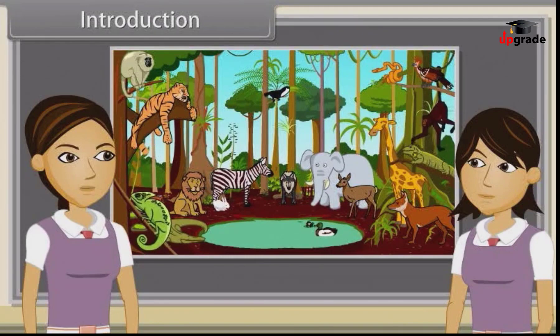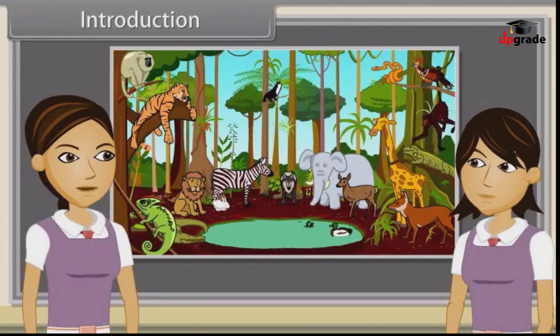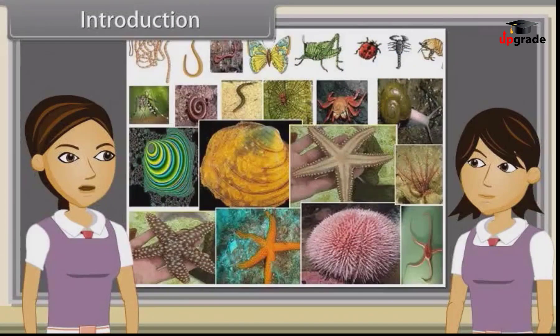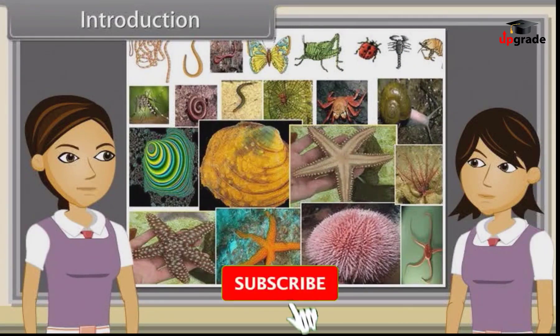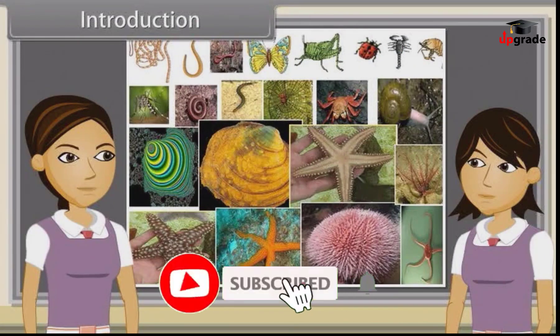Now we are going to discuss the characteristics of platyhelminthes, ascelminthes, annelida, arthropoda, mollusca and echinodermata.